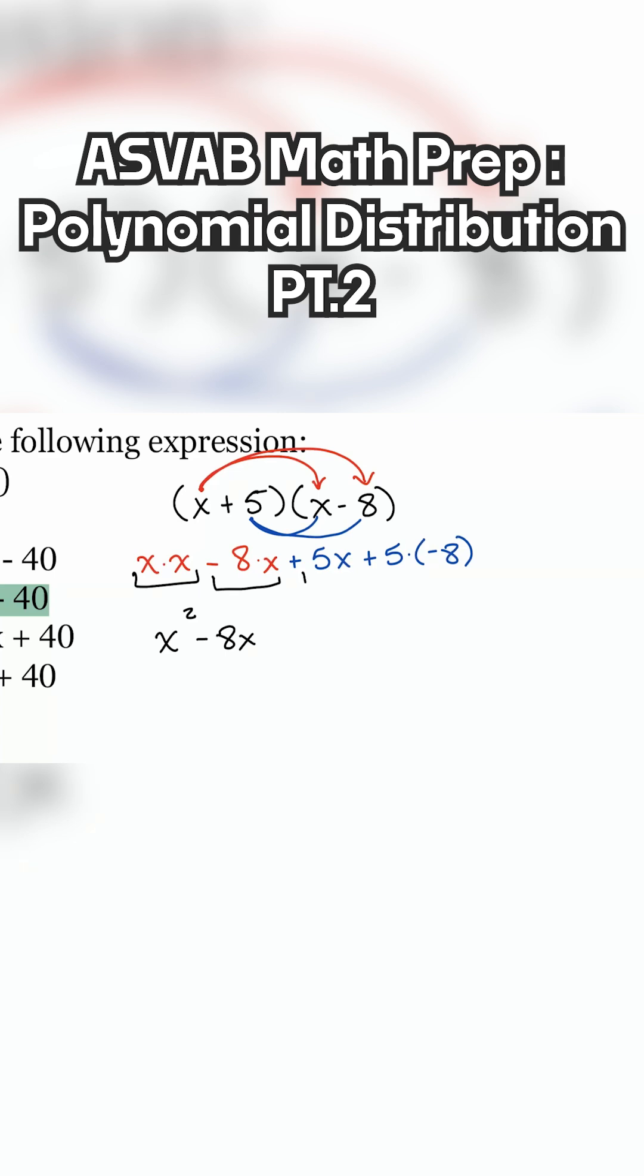We continue from there. Five times x, that's five x. And then we have the five times the negative eight. Everybody, five times negative eight, what's that going to give us? Correct, negative 40. Just like we saw before.